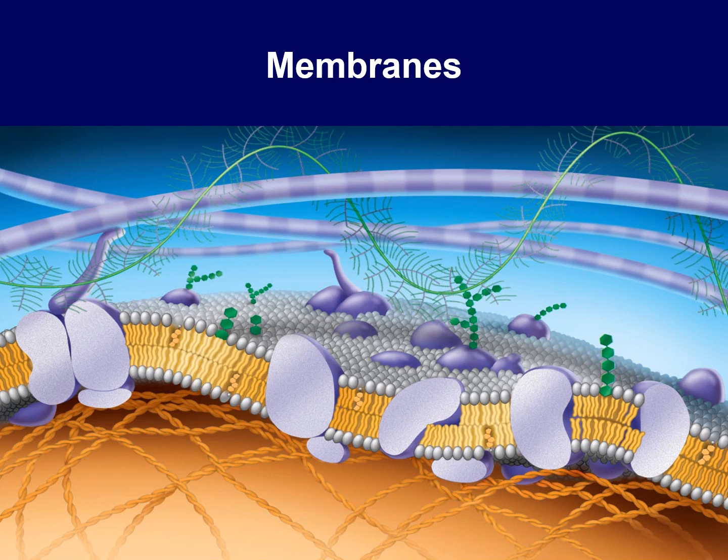Membranes are hugely important. They define what a cell is capable of and how a cell will interact with its environment. We have a membrane that surrounds the cell — that's the plasma membrane or cell membrane — and then we also have internal membranes. Those internal membranes make up compartments, organelles, within the cell, and those compartments have specialized functions.